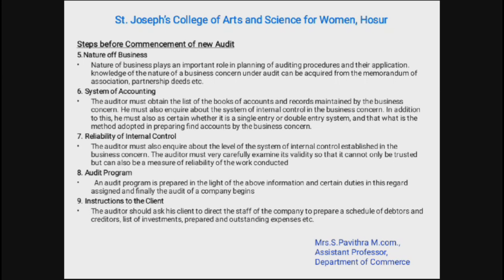Seventh, reliability of internal control — the auditor must also inquire about the level of the system of internal control established in the business concern. The auditor must carefully examine its validity so that it can be trusted and serve as a measure of reliability of the work conducted. Eighth, audit program — an audit program is prepared in the light of the above information, duties are assigned, and finally the audit of the company begins.